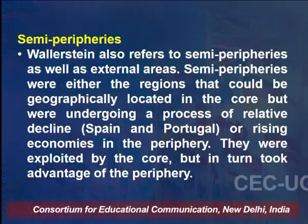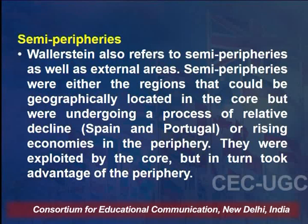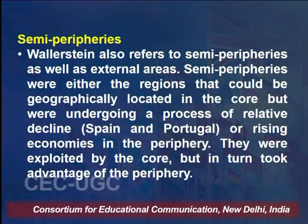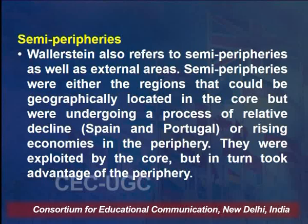Wallerstein also refers to semi-peripheries as well as external areas. Semi-peripheries were either regions that could be geographically located in the core but were undergoing a process of relative decline — examples being Spain and Portugal — or rising economies that could also be put in the category of semi-peripheries. Earlier those countries were part of the periphery, but because of a rapid boom in their economies, they became part of the semi-peripheral states.